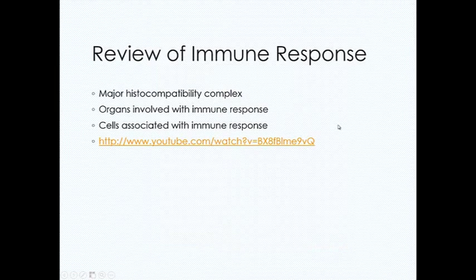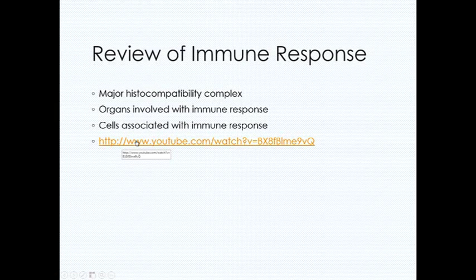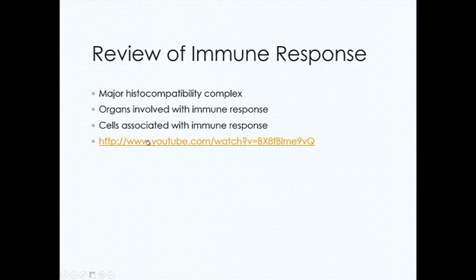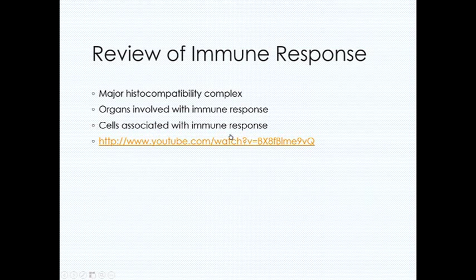In reviewing the immune system, you have what's called the major histocompatibility complex — basically a protein that acts as a scout in your immune system. It goes through and marks anything it detects as being foreign, then forwards that information to your white blood cells and the rest of your immune system, allowing your body to identify foreign antigens. You have several organs involved in immune response that are part of your lymph system, and a variety of cells associated with immune response. I'm going to play the following video for you.